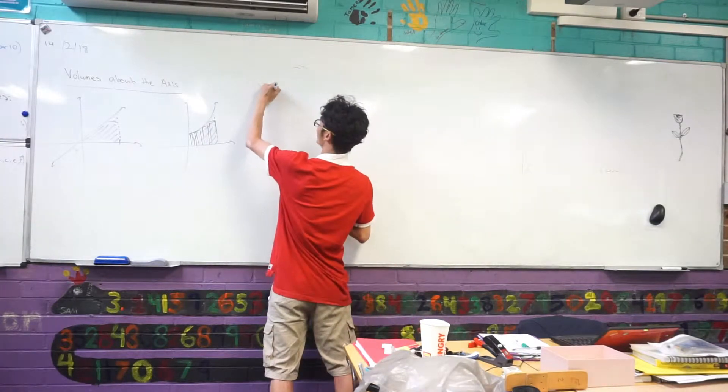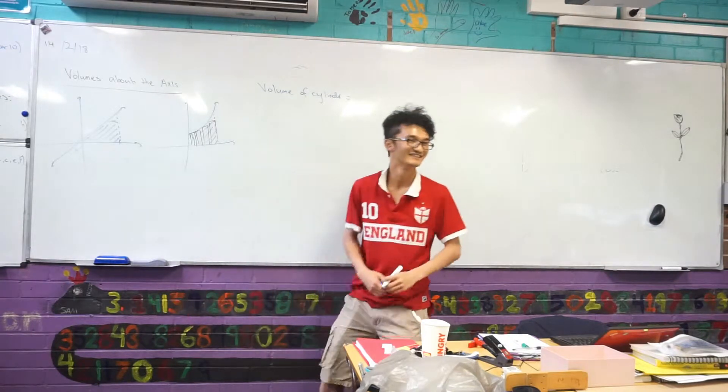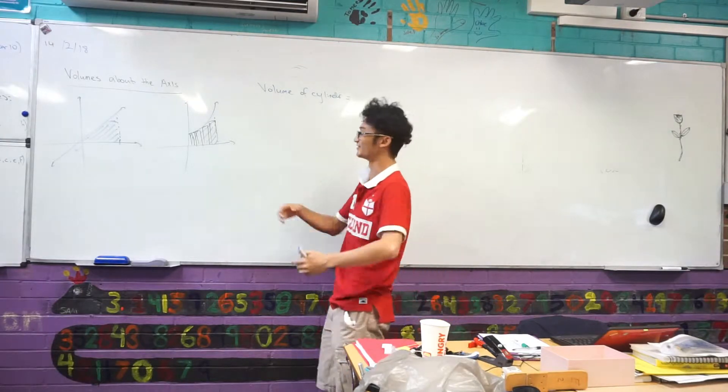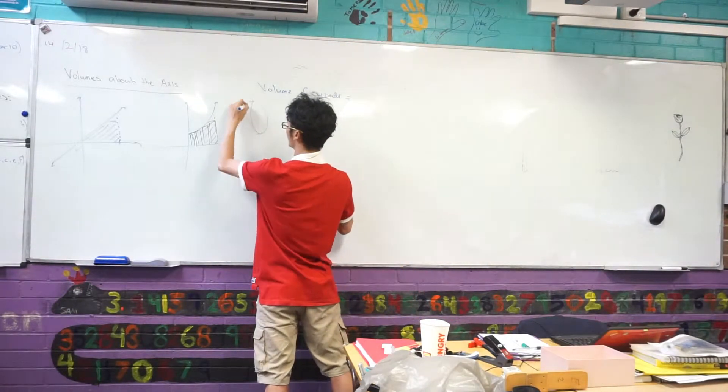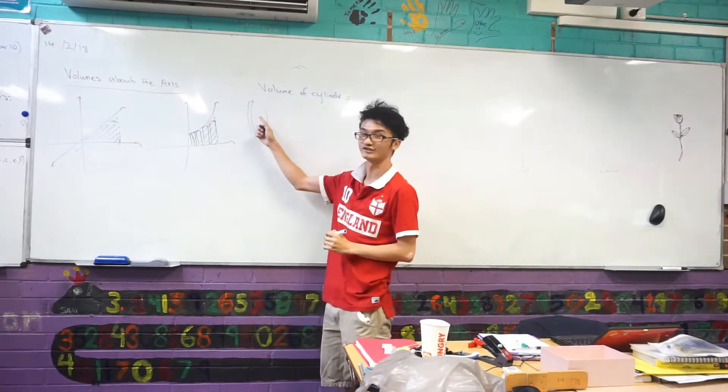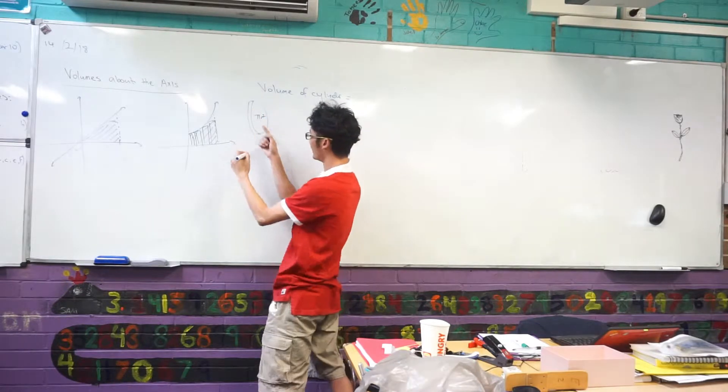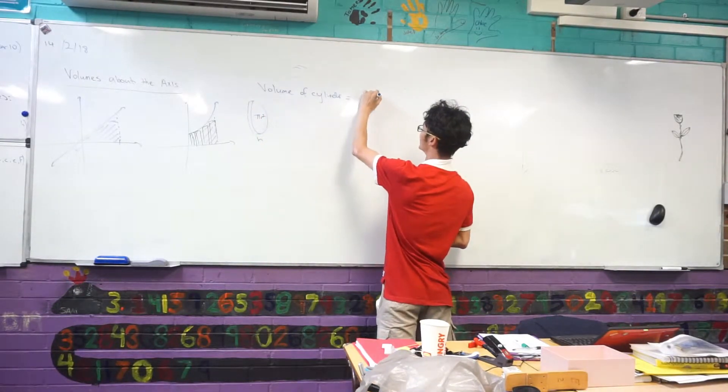Ben, can you remind me what's the volume of the cylinder again? There's a pi in there somewhere. Pi r squared H. Yes, so remember a cylinder like this, we've got the surface area here or the area of the base. We've got pi r squared and we've got H here. So we've got pi r squared times H.